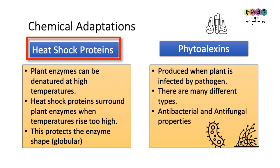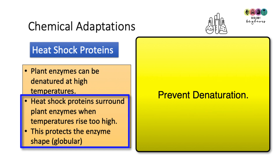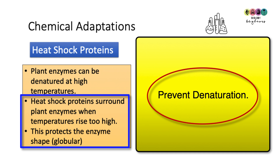Now let's look at some chemical adaptations — for example, heat shock proteins. Plant enzymes are globular shaped proteins, and their shape is key to how they function. At very high temperatures, those plant enzymes can become denatured. In times of extreme heat, heat shock proteins will surround the plant enzymes and protect their globular shape, preventing the shape from being changed.